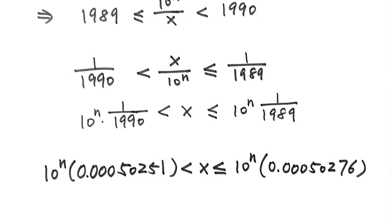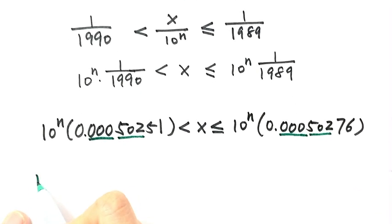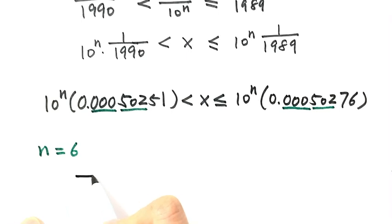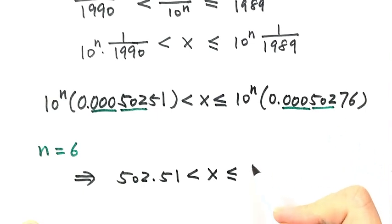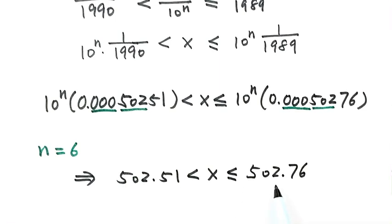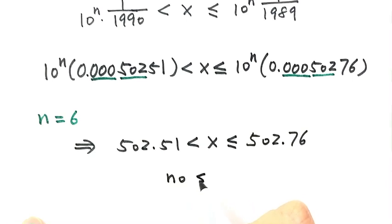Now let's take a close look. The first six decimal places of both fractions are exactly the same. So when n equals 6, multiplying 10 to the power 6 by those numbers gives 502.51 on the left and 502.76 on the right. So x must be between 502.51 and 502.76. Since x must be an integer and there is no integer between these two numbers, there is no solution when n equals 6.